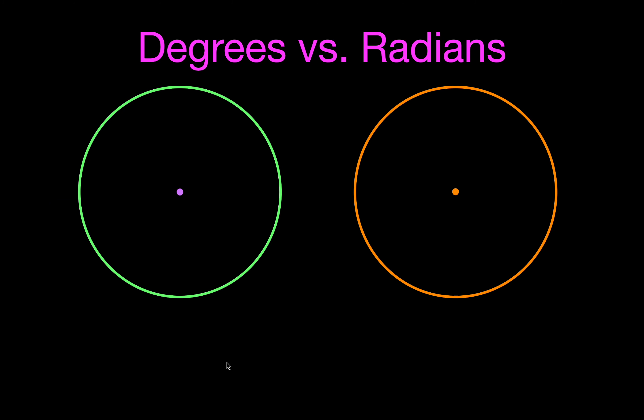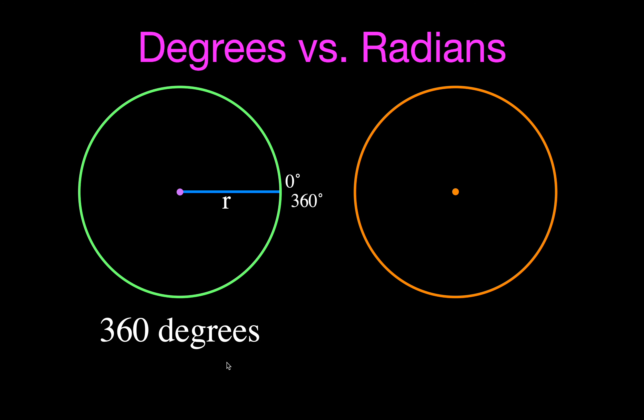We're going to go over everything you need to know about a radian, including the complete definition. It's good to start with a little comparison between degrees and radians. Most people know that when you draw a line from the center to the edge of a circle that's the radius, and going all the way around the circle is 360 degrees.